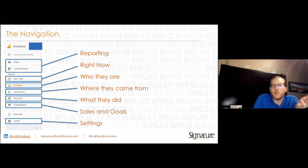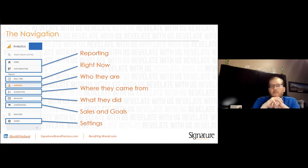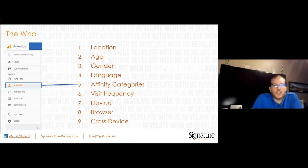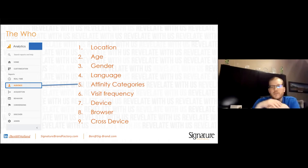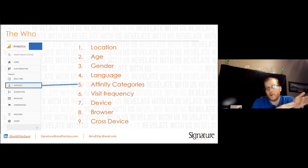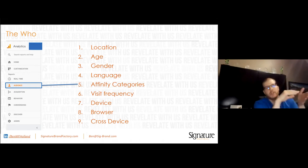The next section is Audience — who the people are that are coming to your website. Acquisition is where they're coming from. Behavior is what they did on your website. Conversion is sales and goals. The Audience section has location, age, gender, language, affinity categories from the DoubleClick network — like interests such as foodie or tourist — visitor frequency, device type, browser, and cross-device tracking from phone to tablet to desktop. They really figured out cross-device, which was a big problem a long time ago.